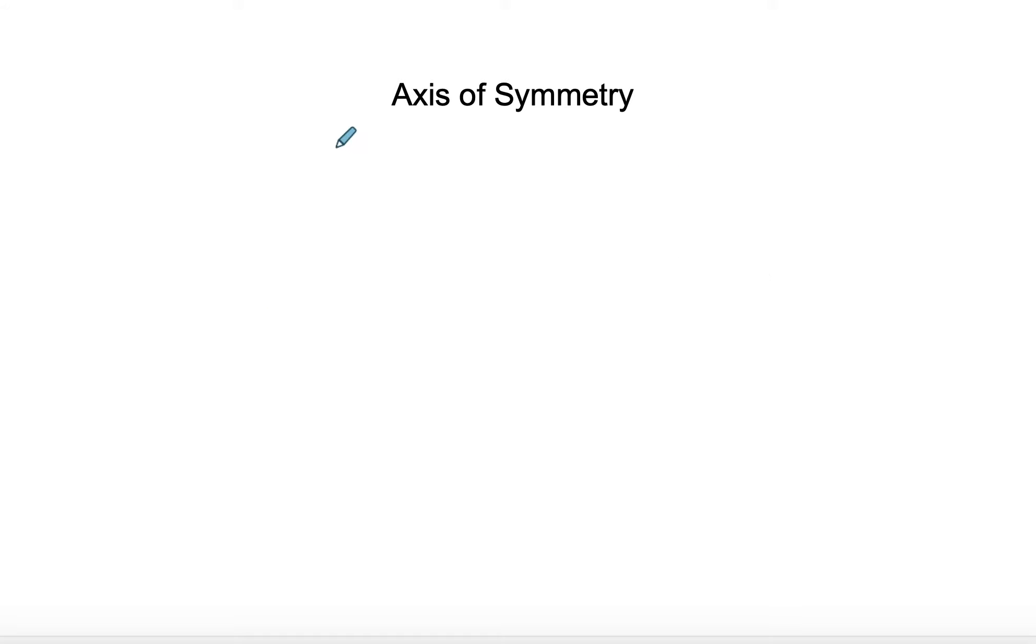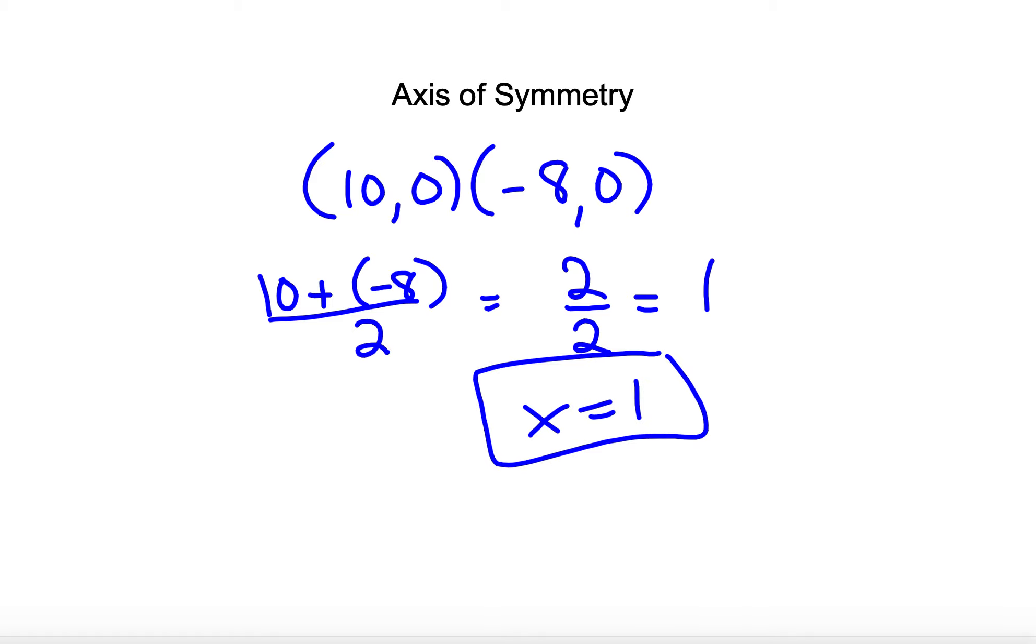So if it was written like this, 10, 0, and negative 8, 0, you would say 10 plus negative 8 divided by 2. So that's going to give you 2 divided by 2, which is 1. So the axis of symmetry is x equals 1.